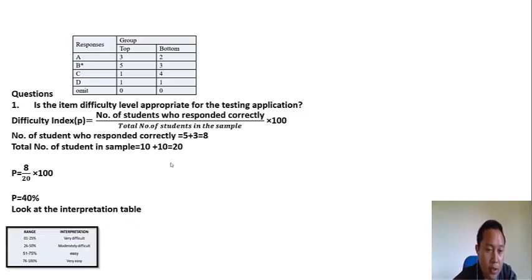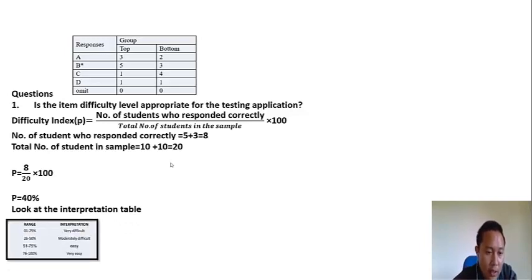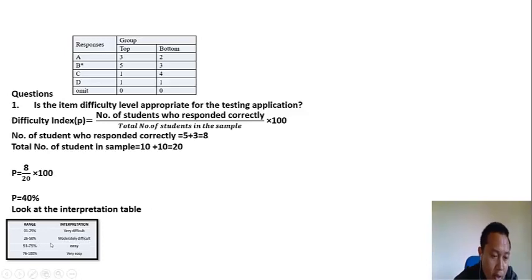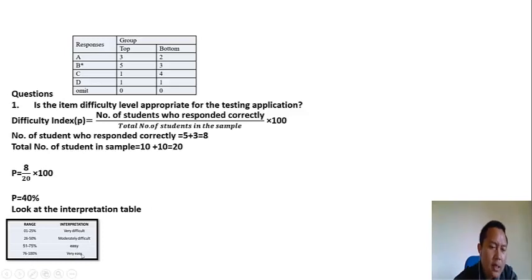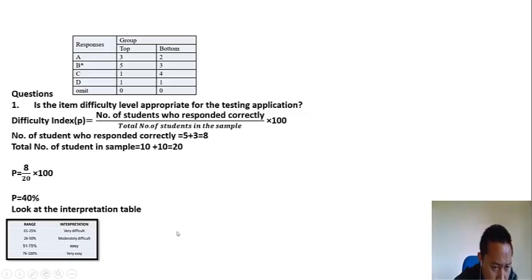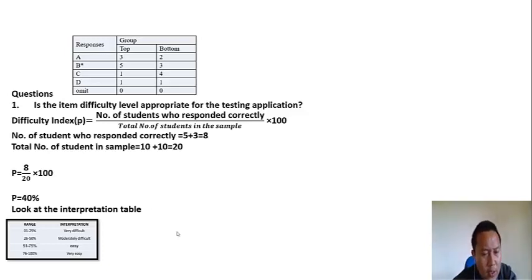Now we look at the interpretation table for difficulty index. 1 to 25 percent is very difficult, 26 to 50 percent is moderately difficult, 51 to 75 percent is easy, and 76 to 100 percent is very easy. In our case, 40 percent falls under moderately difficult, so we can say this item is good.